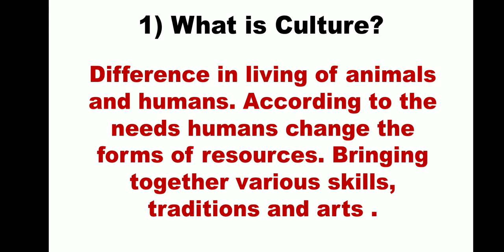Let us see the first point: What is culture? In this paragraph, animal's life and human's life are given separately. Animals depend upon nature to fulfill their needs, however animals do not much change the environment. For example, bears live in caves, monkeys live on trees, birds live in nests. Only human beings change the natural features of their surroundings.